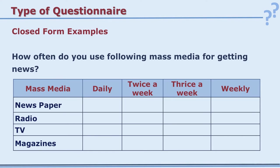Another example: 'How often do you use the following mass media for getting news?' Rows are newspaper, radio, TV, and news magazines; columns are daily, twice a week, thrice a week, and weekly. The respondent puts a tick mark for each medium and the appropriate frequency. These criteria are mutually exclusive, so there is only one tick mark per row — this is why closed form is also called forced choice.